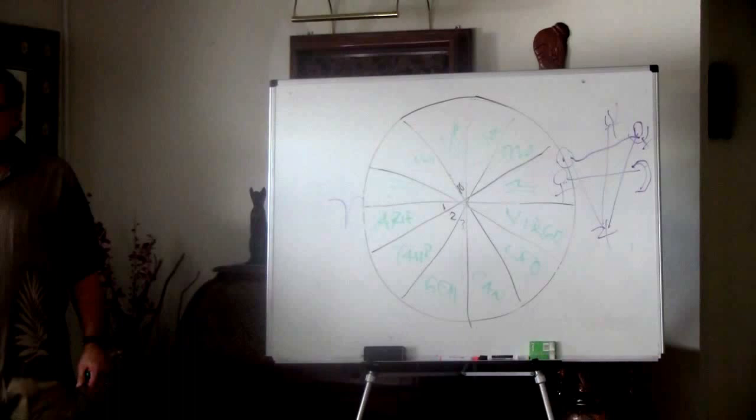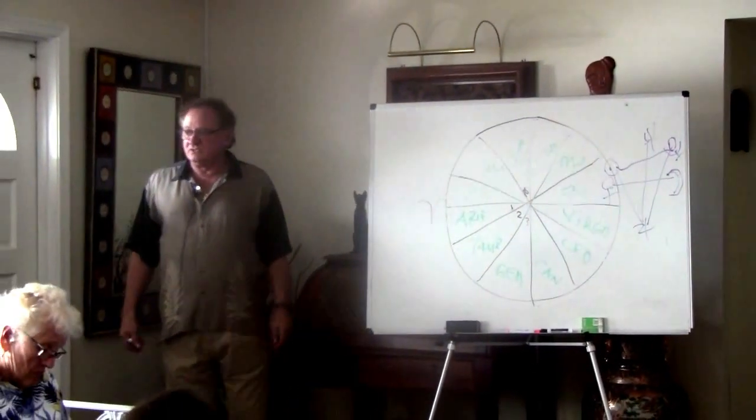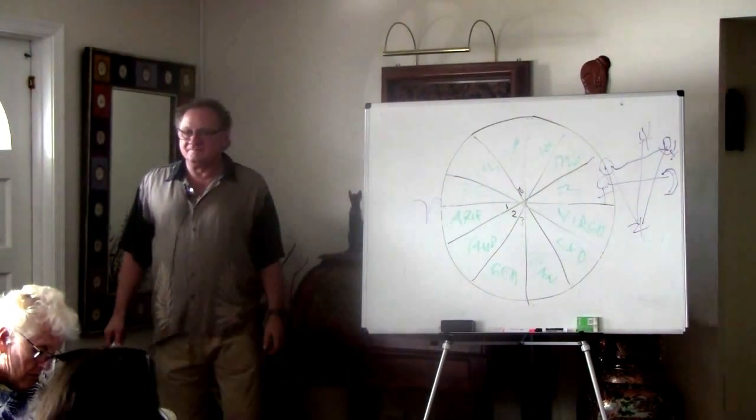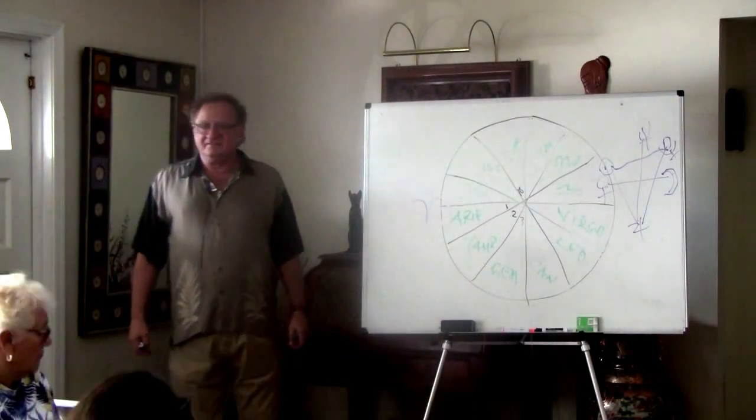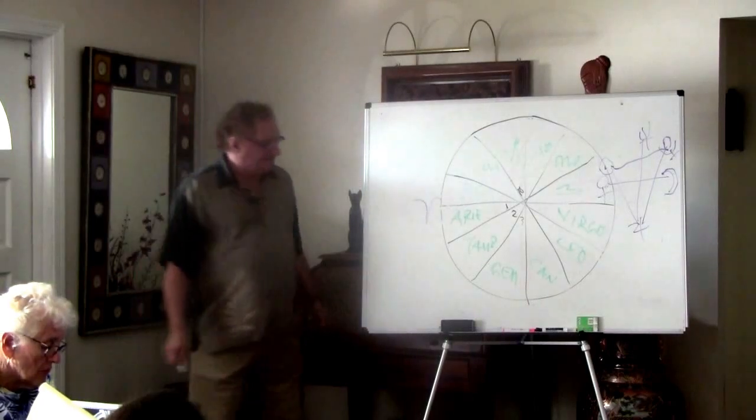I want you to learn these symbols. Remember I told you the best way to learn them is when you're reading your book. Every time you see the word Aries, make the symbol above it. It helps, doesn't it? The mind is lazy. And if you have to keep going looking it up, you're just going to say heck with it, I might as well learn it.